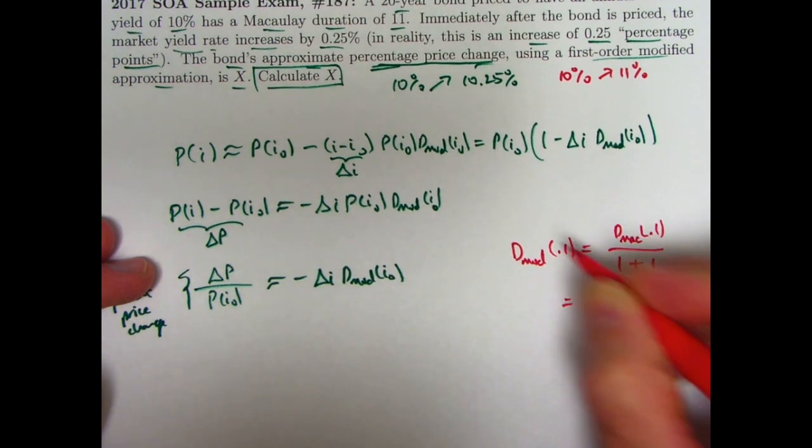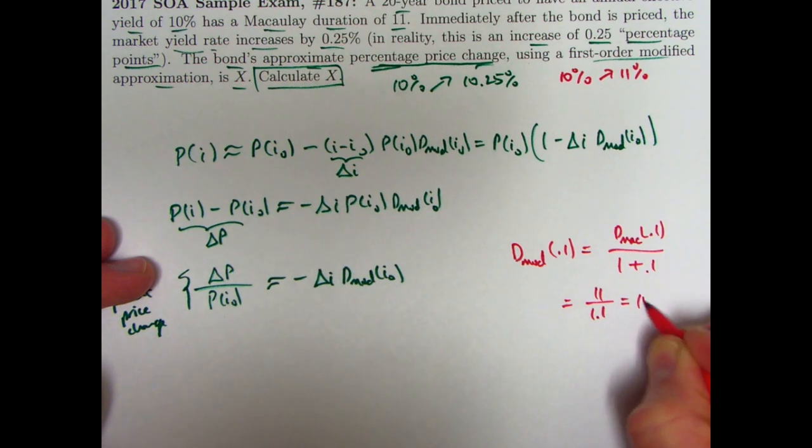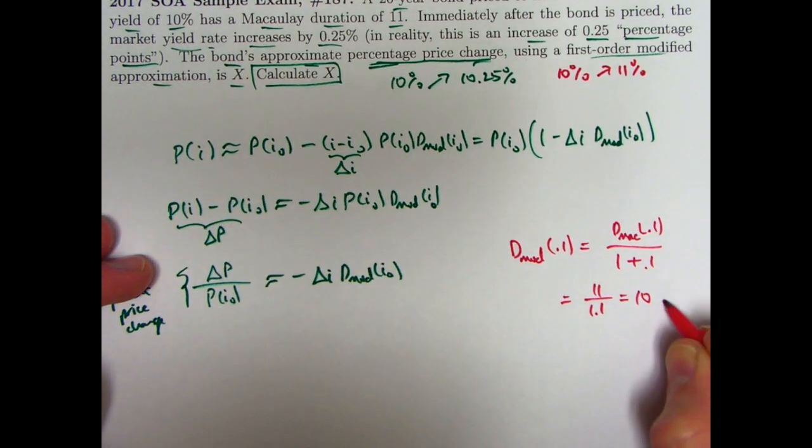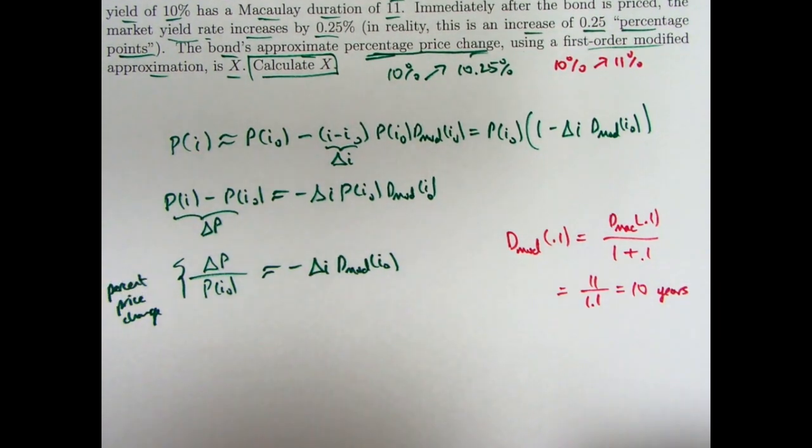We're given that the Macaulay duration is 11. We're dividing 11 by 1.1. We're going to get a modified duration of 10. And again, the assumption is this is in years. You don't have to put the years there to solve the problem, but I will emphasize that the units of time here for these durations would be in years.